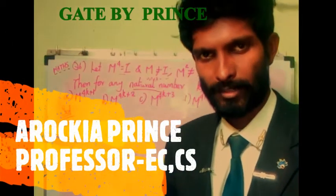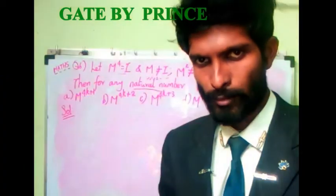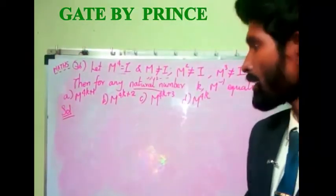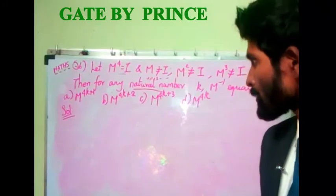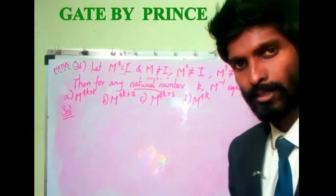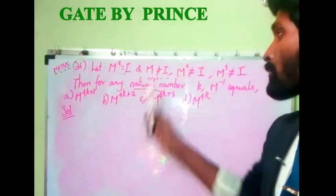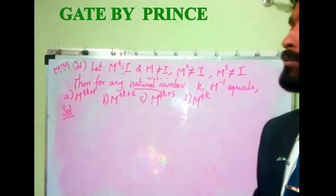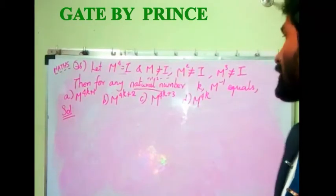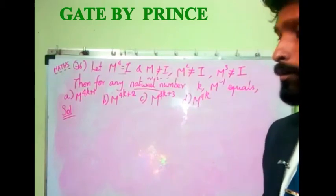Welcome back for question number six. What's given is that m power 4 is equal to identity, where m is a matrix — m power 4 means m multiplied by m into m into m. Then they say the actual matrix m is not equal to identity, m squared is also not equal to identity, and m cubed is also not equal to identity.